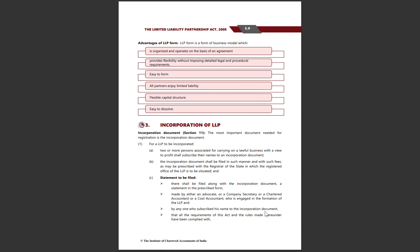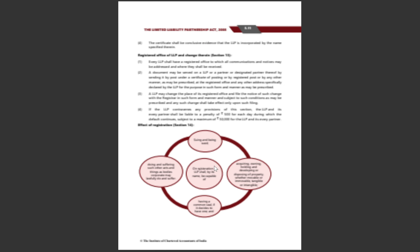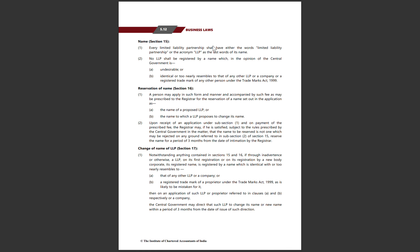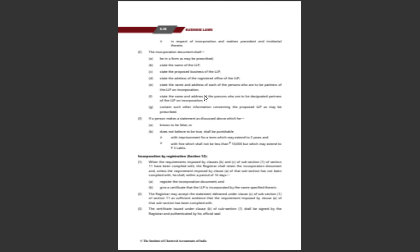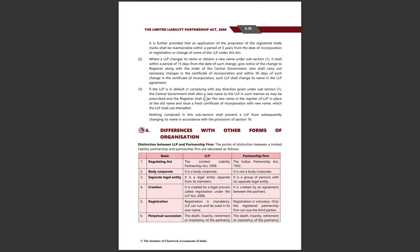So this was the whole process of incorporation — first, you have to file the incorporation document and the statement, and understand what the incorporation document contains. Then you need to know how registration works, what the registered office requirements are, what the effects of registration are, how to reserve a name, how to change it, and what happens if you default. This whole process of incorporation is very important to remember. Thank you so much for watching this video.